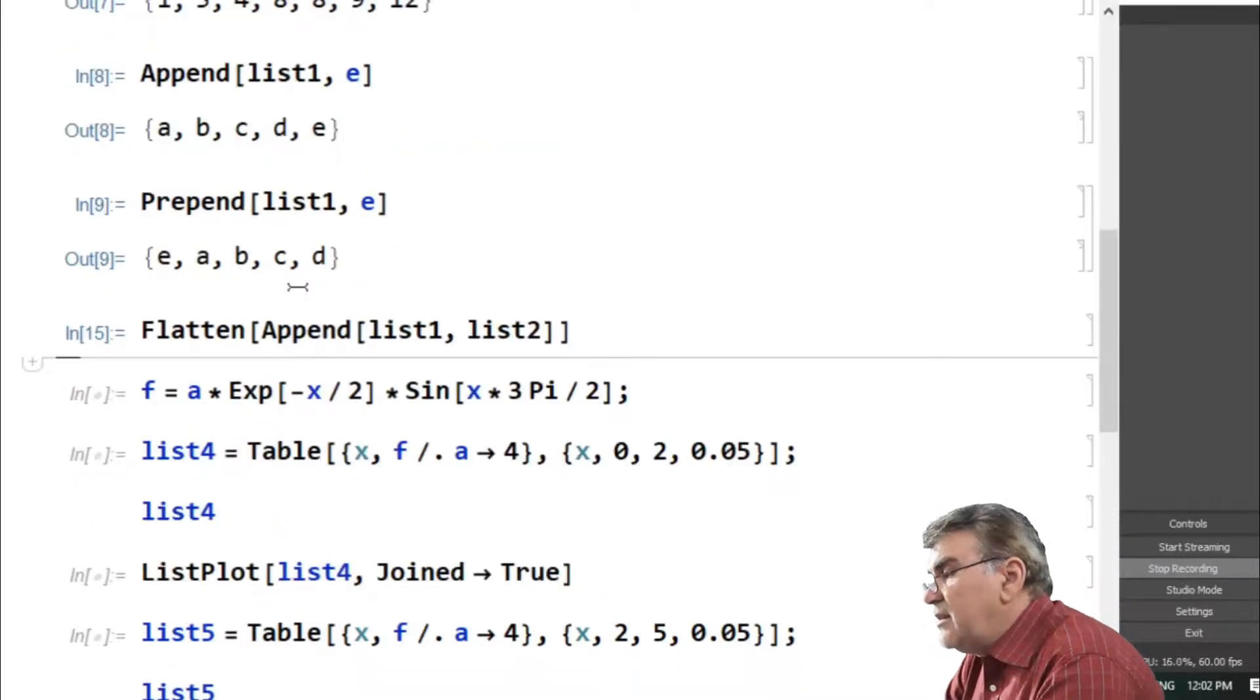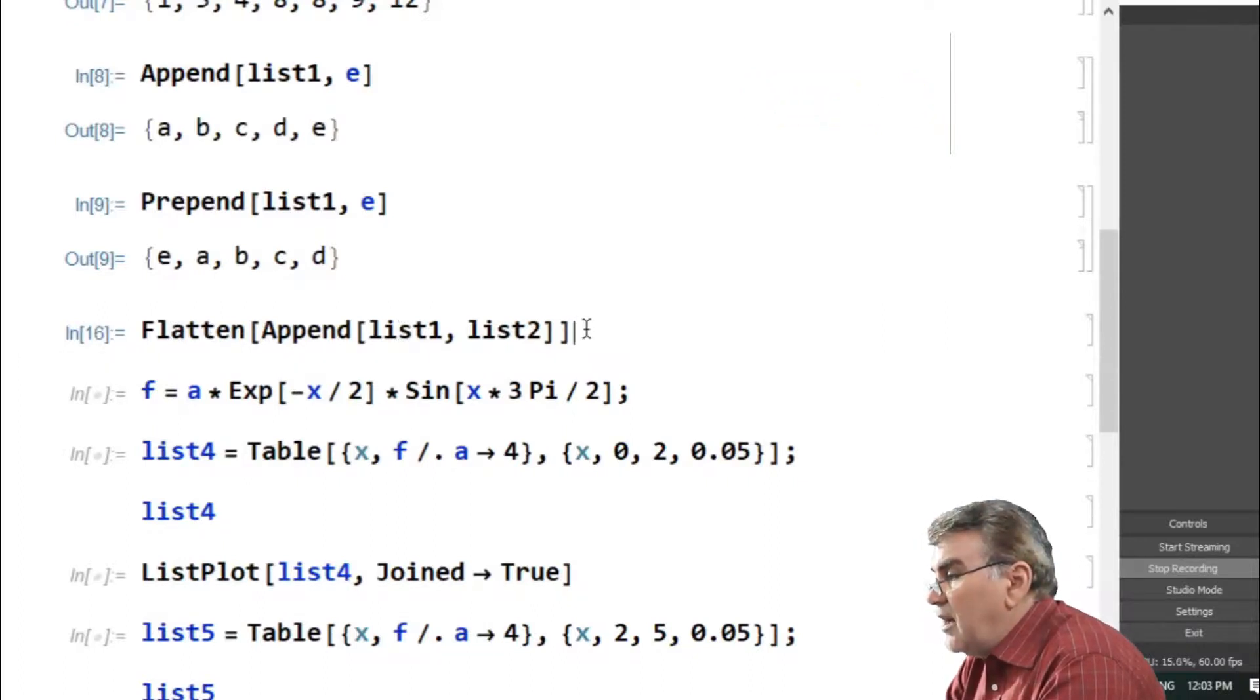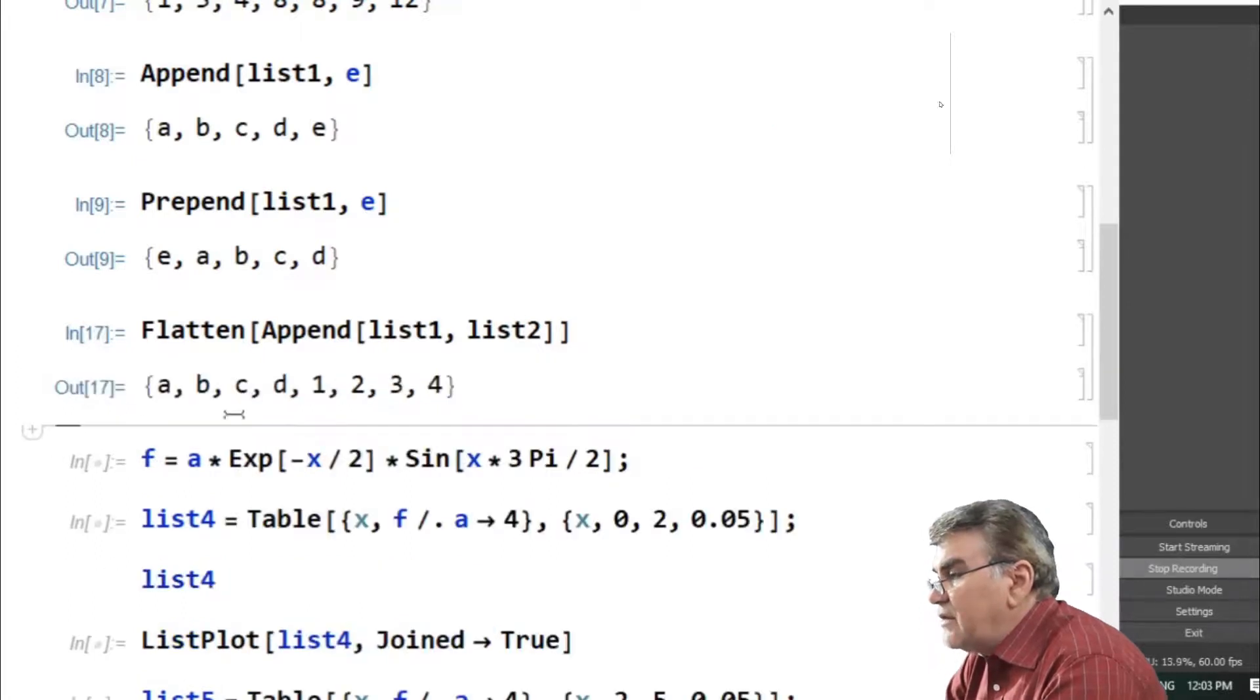Similarly, one can add the elements of one list to the elements of another list through the append command. For example, here I want to add the elements of list2 as the last elements to the elements of list1. In this case I use an additional command, flatten. If I run this out, I'll get a list consisting of the elements of list1 and the elements of list2.